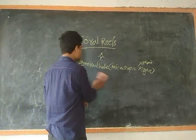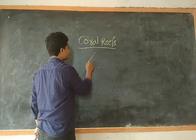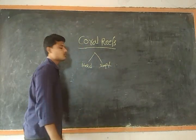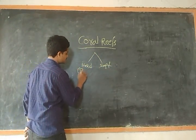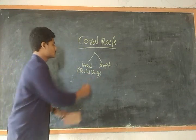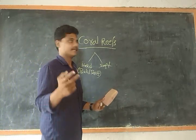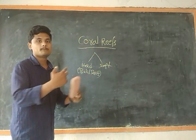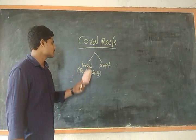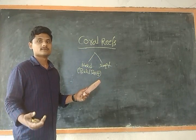After this, if you see the types of corals — we have two types of corals. That is hard coral and soft coral. A hard coral is the one which builds the reefs. The reefs are built by hard corals. Soft corals and hard corals are the two types. Hard corals are the ones which build the reefs.